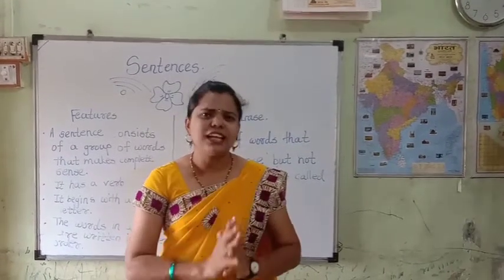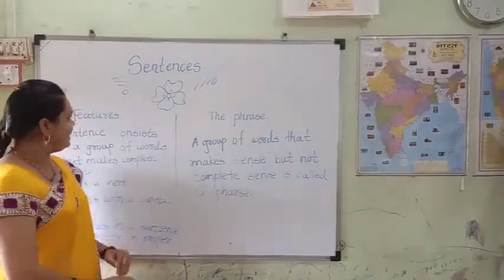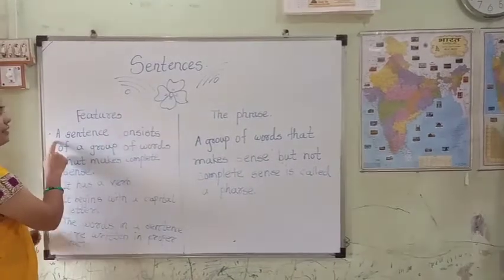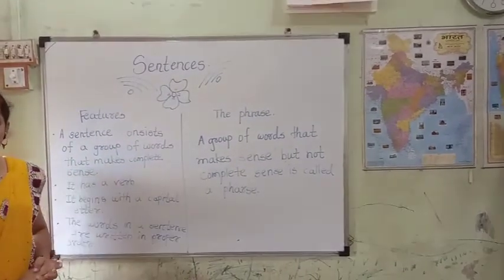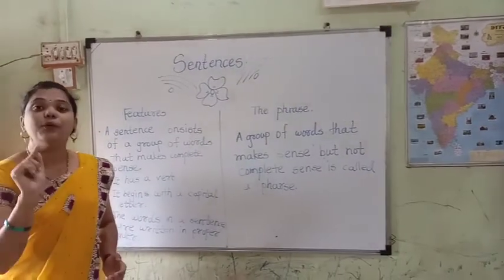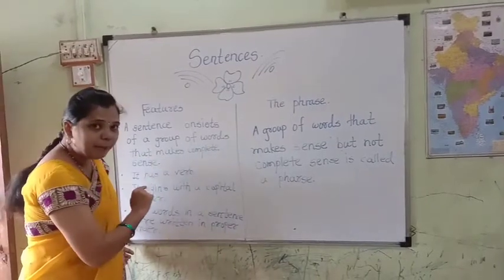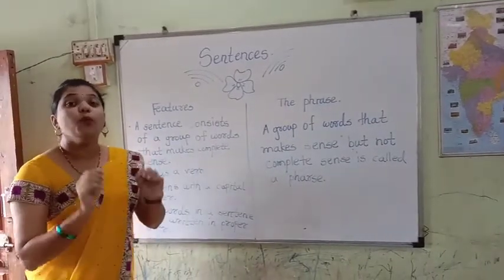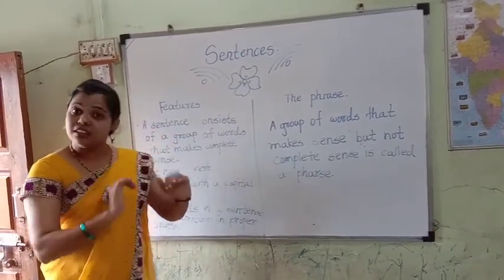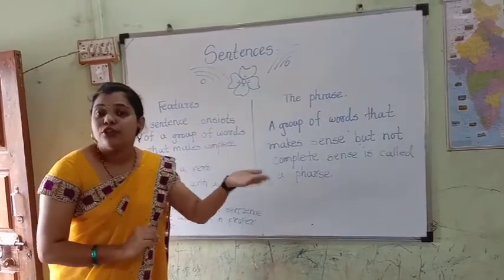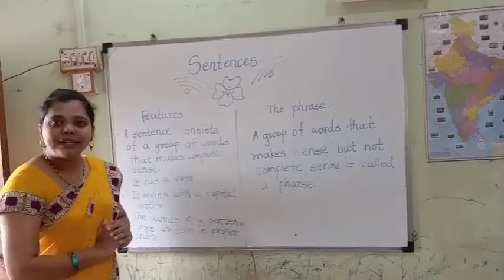So, children, today we will learn exactly what is the meaning of sentences. The meaning of sentences — the features I have written here — a sentence consists of a group of words that makes complete sense. It's very important, children. It is a group of words which makes complete sense. Whenever we listen, we can understand immediately what that person is going to share with us. And because of that, it has a complete sense.